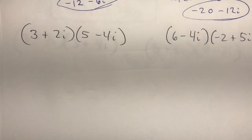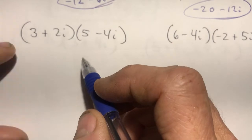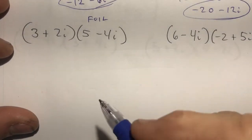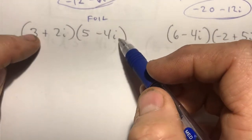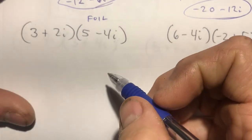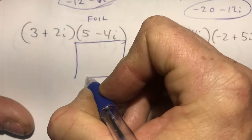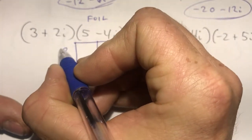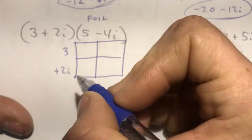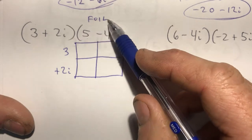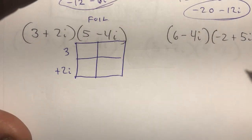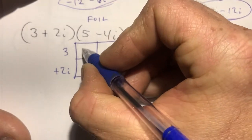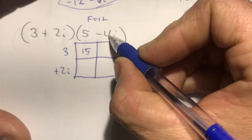When you have a complex number times a complex number, we use the FOIL method — first, outer, inner, last. I like doing FOIL in a box format. I make a column for the five and a column for the negative 4i, and a row for the three and a row for the plus 2i. This gives four products arranged in a box, making it easier to see what goes together and reducing mistakes.